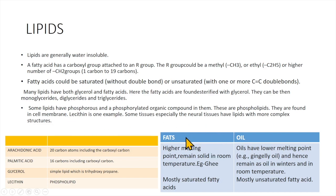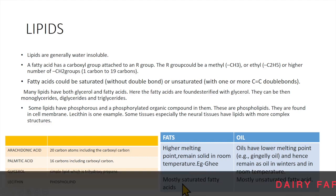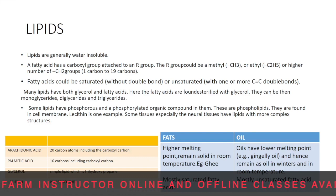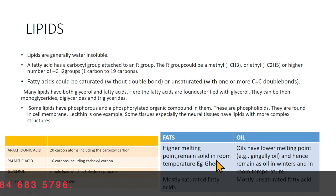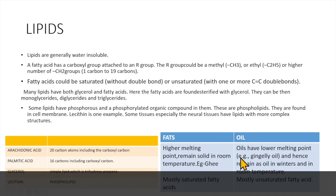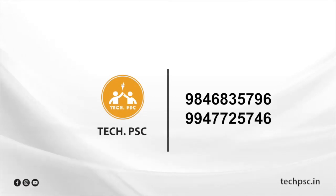In common classification, lipids are known as fats and oils. Fats have a higher melting point and remain solid at room temperature — for example, ghee. Oils have a lower melting point — for example, gingelly oil — and hence remain liquid at room temperature. Fats contain mostly saturated fatty acids, meaning without double bonds. Oils contain mostly unsaturated fatty acids with one or more double bonds. So fats will have saturated fatty acids and oils will have unsaturated fatty acids.